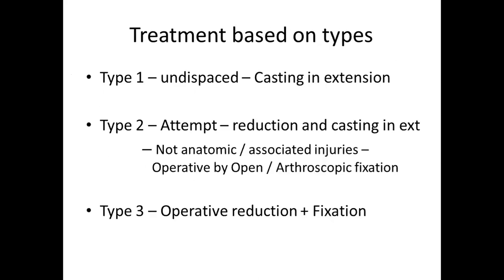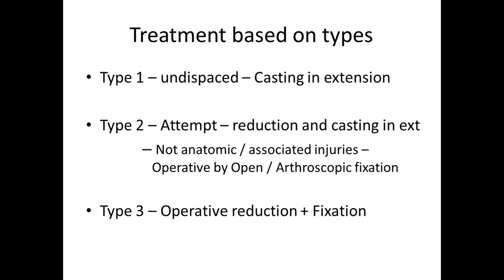Management by type: Type 1 is undisplaced and amenable to casting in extension. Type 2 — closed reduction is attempted with casting in extension, but the ACL pull is almost always there and it does not sit anatomically; if an anterior opening persists it is better to proceed with arthroscopic or open fixation with a screw or suture, because even if it heals in that position there will be laxity giving anterior instability. Type 3 almost always requires operative reduction and internal fixation, either open or arthroscopic — both are accepted approaches.